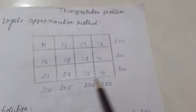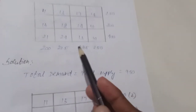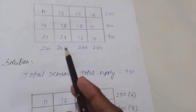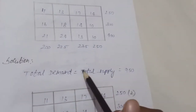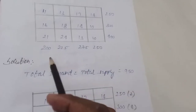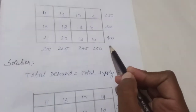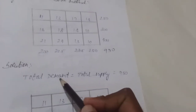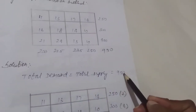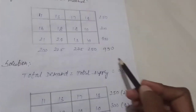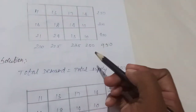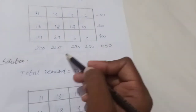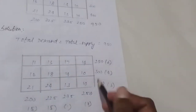This is the given transportation problem. First, we check the total demand and total supply. If total demand equals total supply, the problem is balanced. If not, we need to add a dummy row or dummy column. Now we proceed with the given transportation problem.